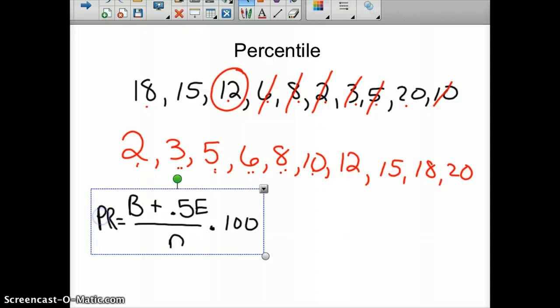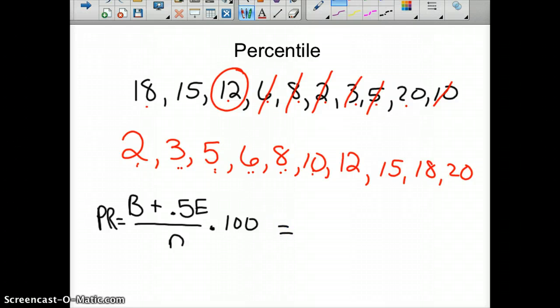And I have my formula already down here on the bottom. PR for percentile rank is B plus 0.5E over N times 100. And if you remember, B is the number of scores below our score.